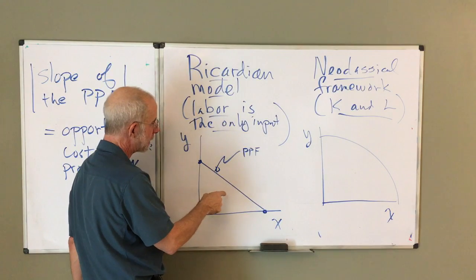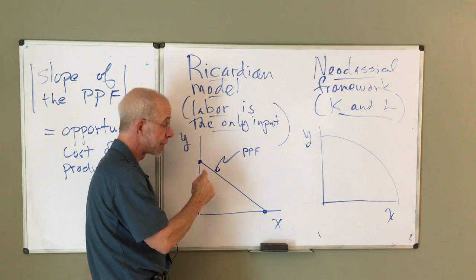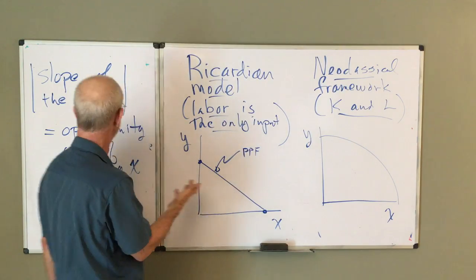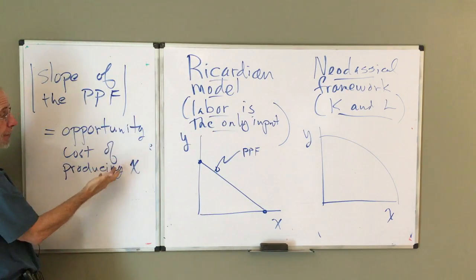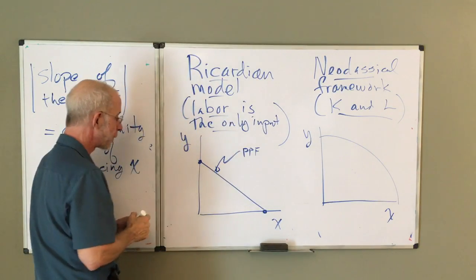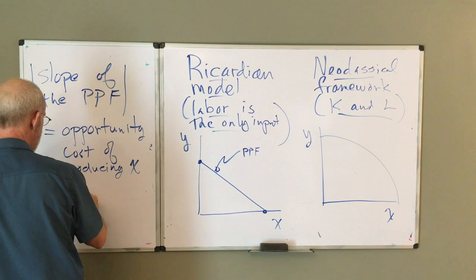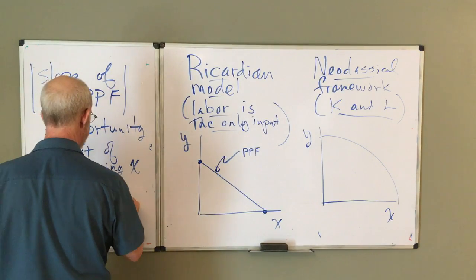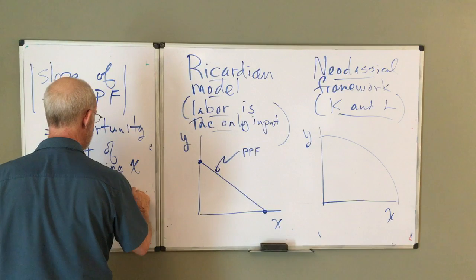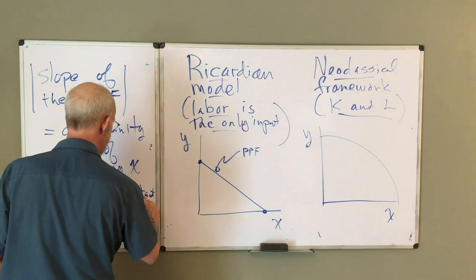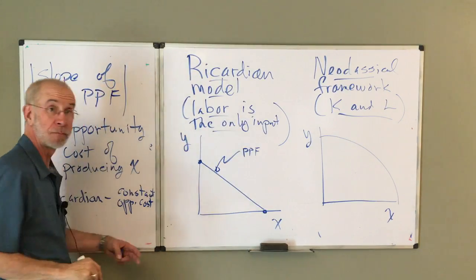But one of the things that you'll notice about this linear PPF is that the slope is constant, right? Okay? Slope is the opportunity cost. With the Ricardian model, you have a constant opportunity cost. Doesn't change.